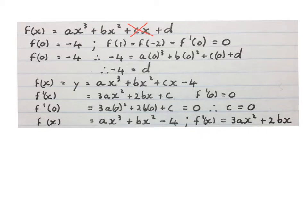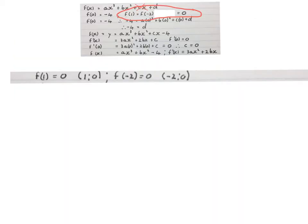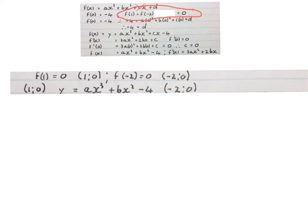Reducing the workspace a little. They told us f(1) = 0 and f(-2) = 0. This means we have a coordinate where x is 1 and y is 0, and another coordinate where x is minus 2 and y is 0. So we have two coordinates on this graph.